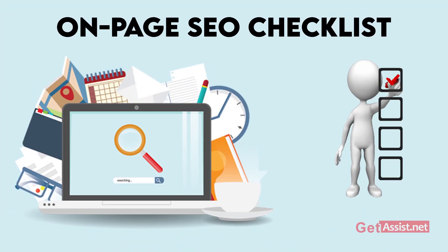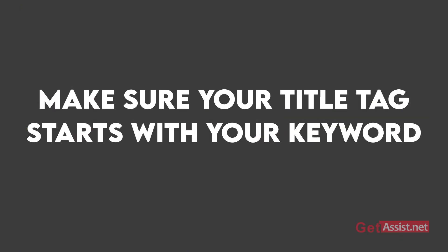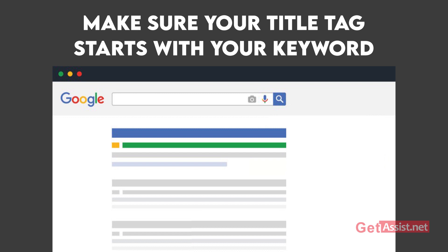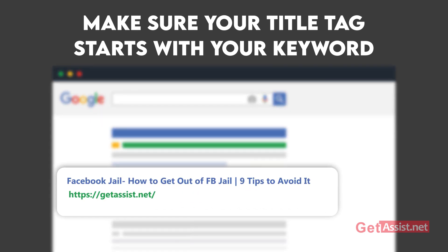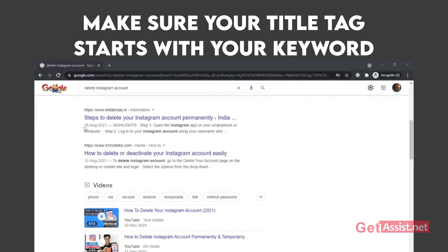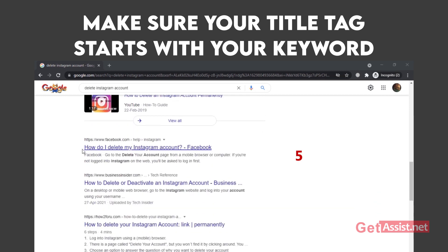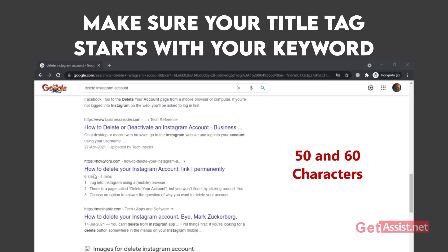So now let's start with the checklist and show you how you can master on-page SEO. The title tag is a really important on-page ranking factor — that's why it is important to give proper attention to keyword placement in a title tag. The closer you keep the keyword to the beginning of the title, the more weight it has with search engines. Try to keep your title tag between 50 and 60 characters and keep the targeted keyword as close as you can to the beginning.